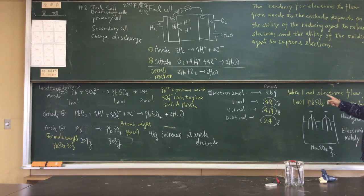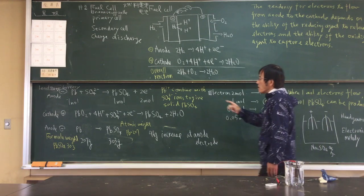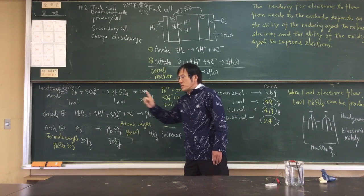When 1 molar electron flows, 1 molar lead sulfate can be produced at the anode.